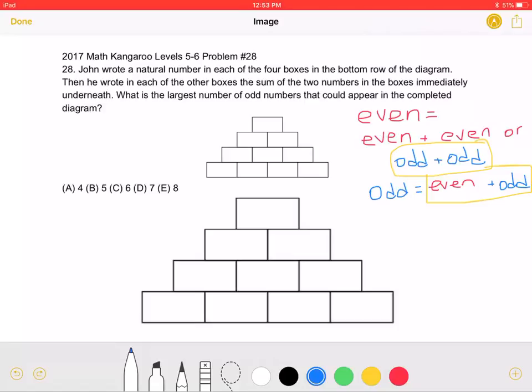This is the 2017 Math Kangaroo, Levels 5-6, Problem Number 28. John wrote a natural number in each of the four boxes in the bottom row of the diagram. Then he wrote in each of the other boxes the sum of the two numbers in the boxes immediately underneath. What is the largest number of odd numbers that could appear in the completed diagram?